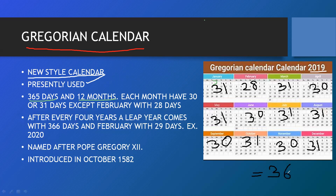Now an important contrasting point: after every four years, a leap year comes that has 366 days and February has 29 days. For example, in 2020 February had 29 days and the year had 366 days. That is called a leap year.